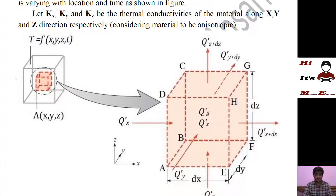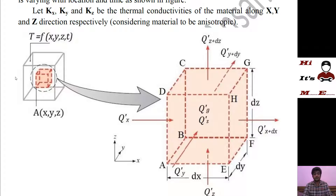Now first of all we have to make another assumption here — that the material is an anisotropic material. By isotropic we mean a material having the same property along every direction. We can classify materials in two ways: isotropic, where property does not change with direction, and anisotropic, where property changes with direction. Another classification is homogeneous and non-homogeneous. We have assumed an anisotropic material and let kx, ky, and kz be the thermal conductivities of the material along x, y, and z directions respectively.